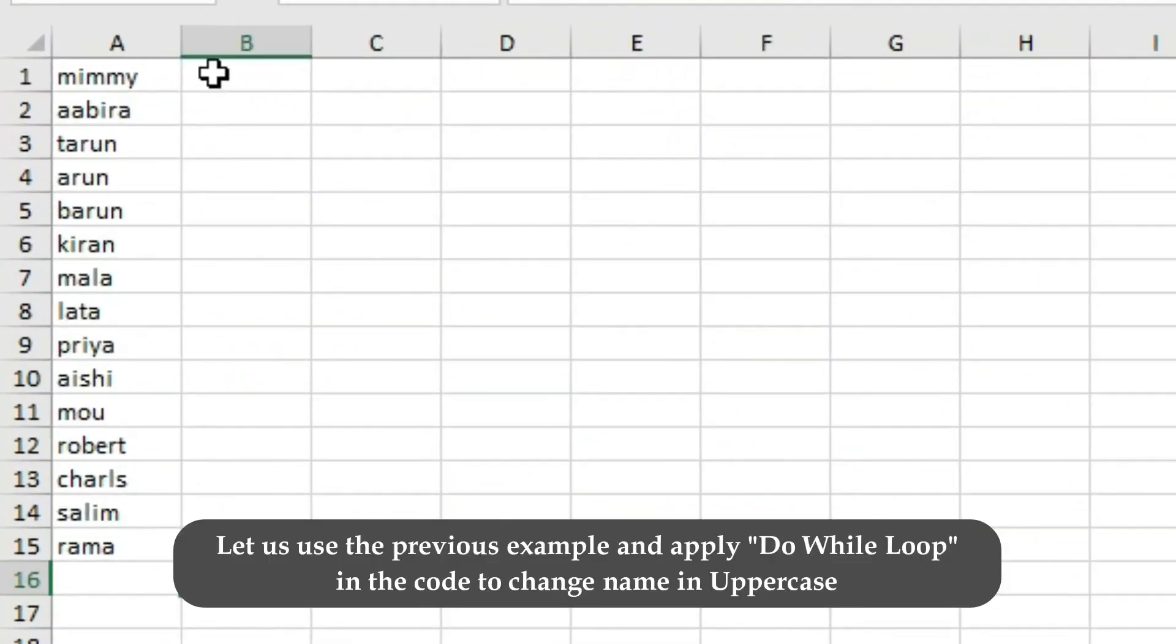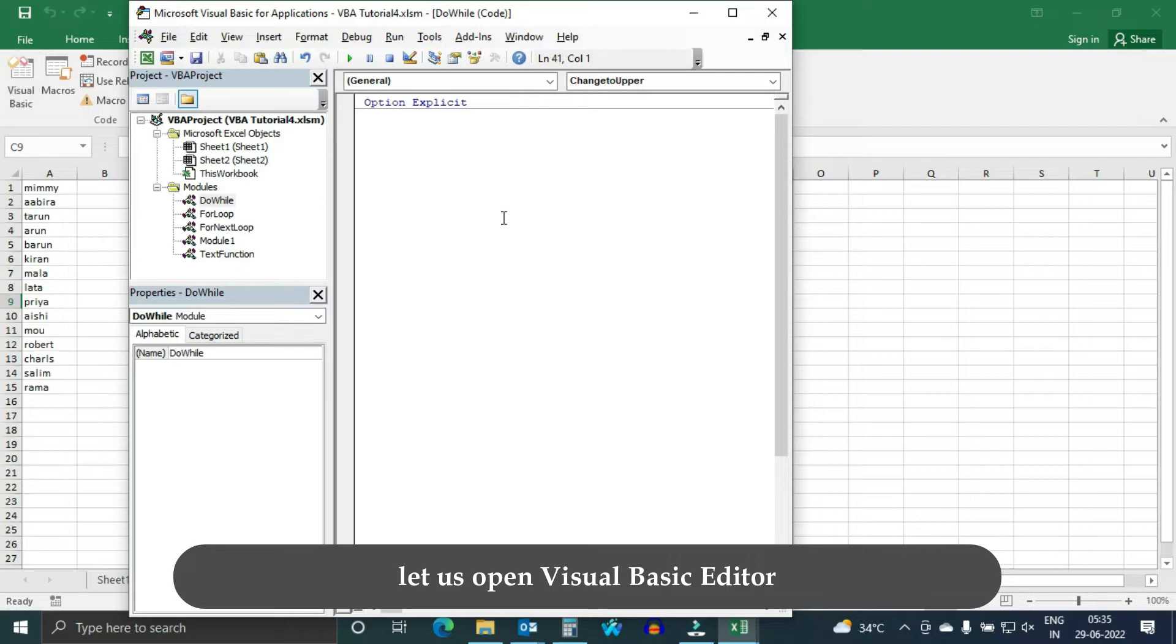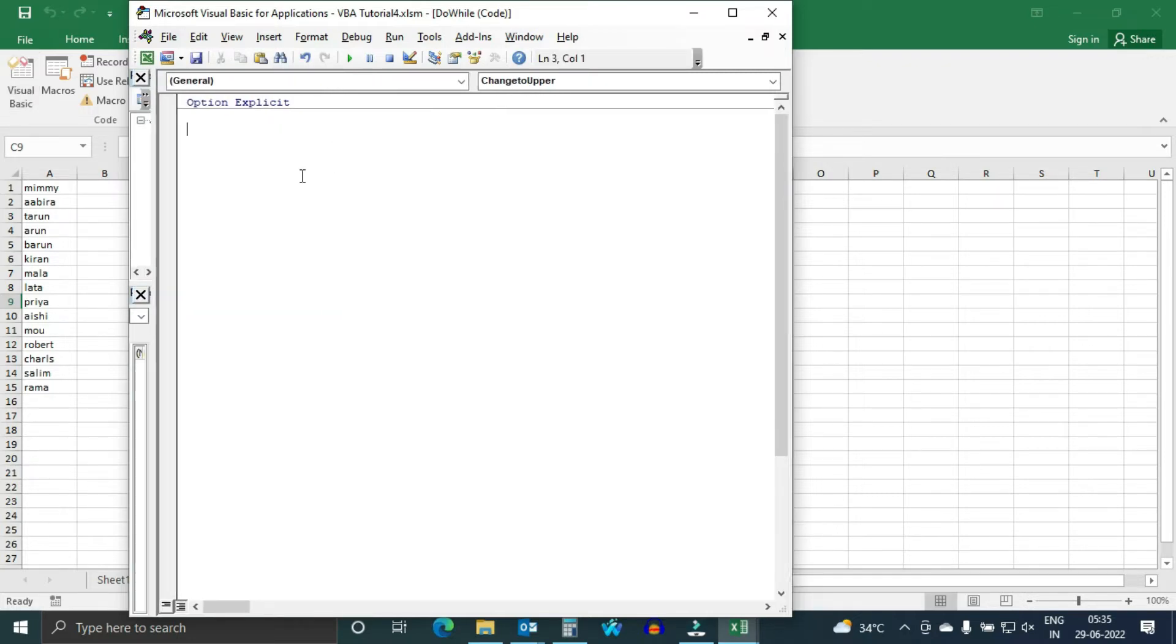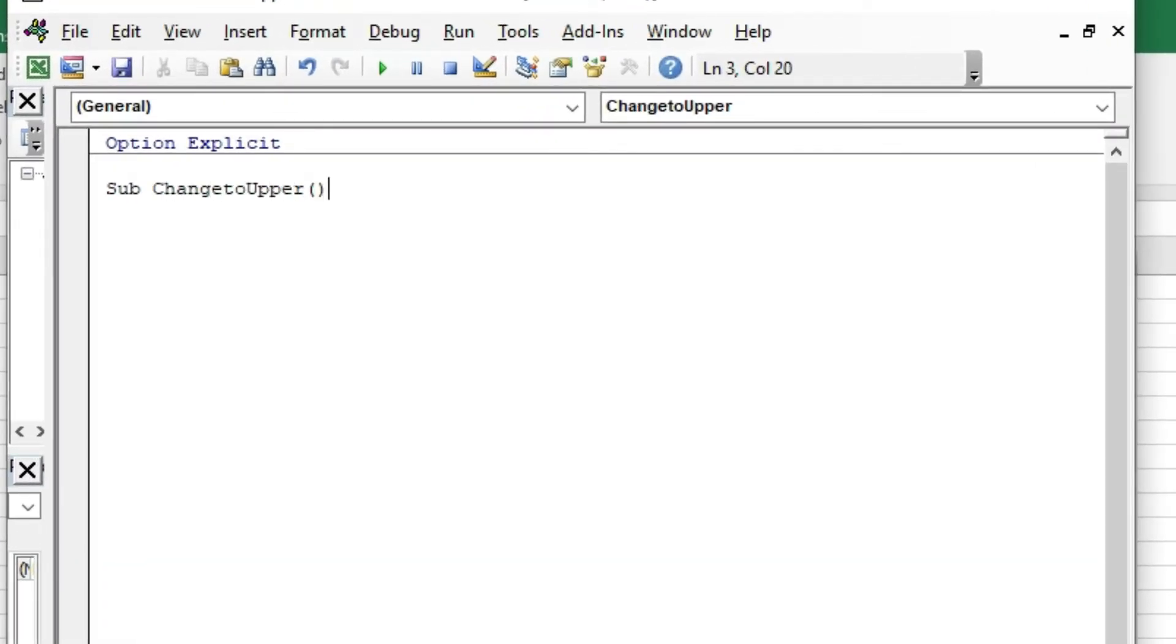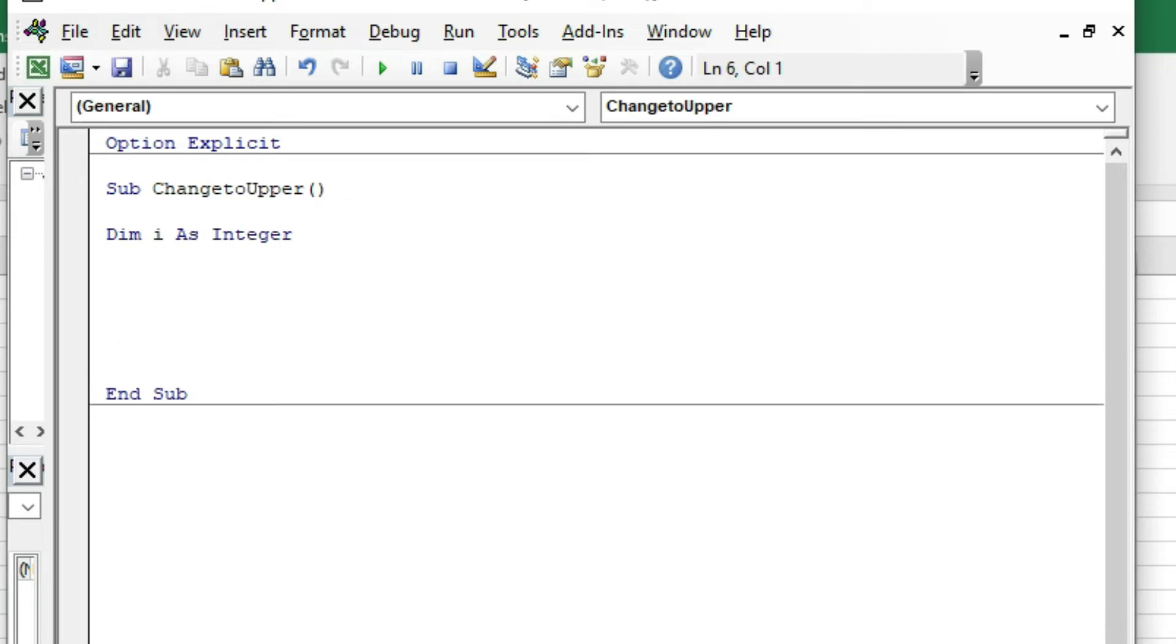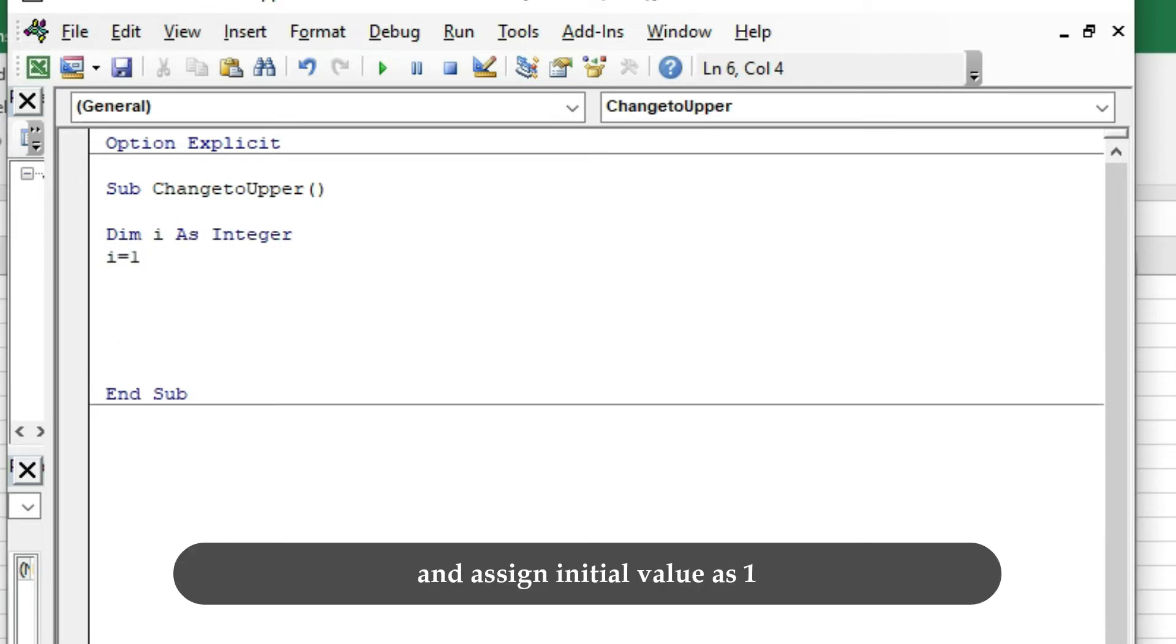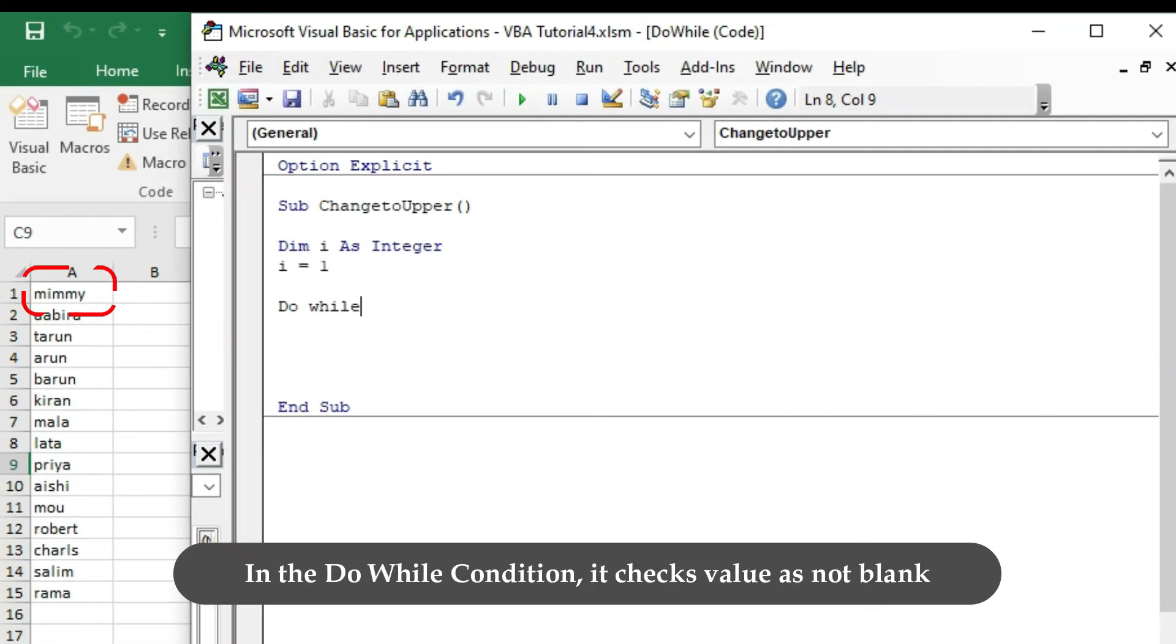Let us use the previous example and apply the Do While loop in the code to change names to uppercase. Let us open Visual Basic editor. Write new sub. Declare i as integer and assign initial value as 1.